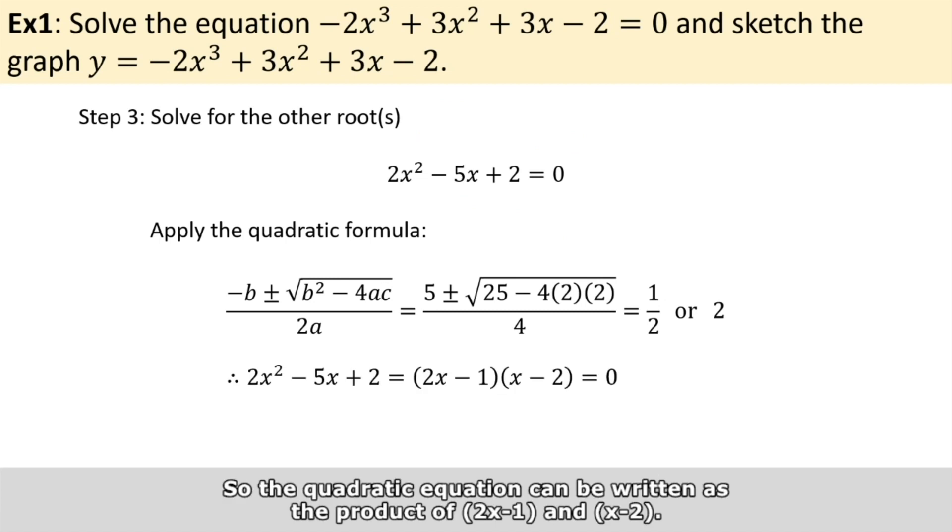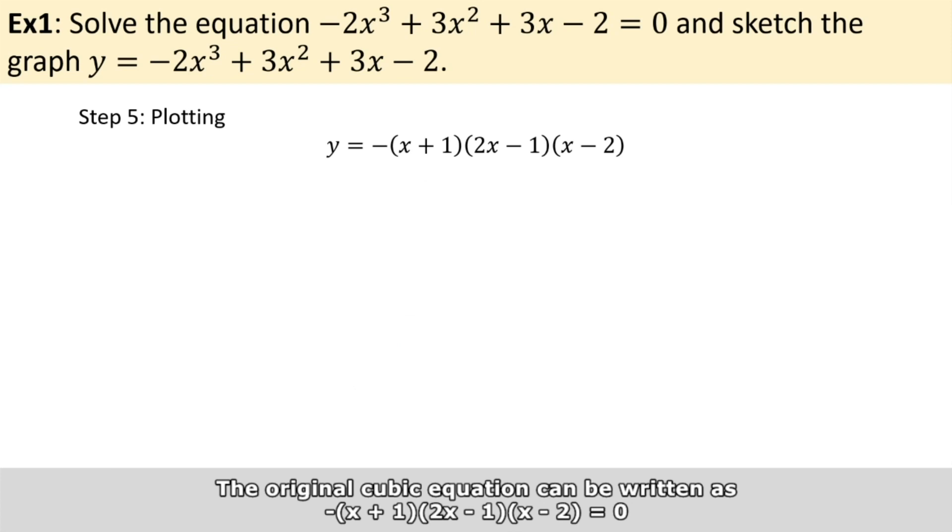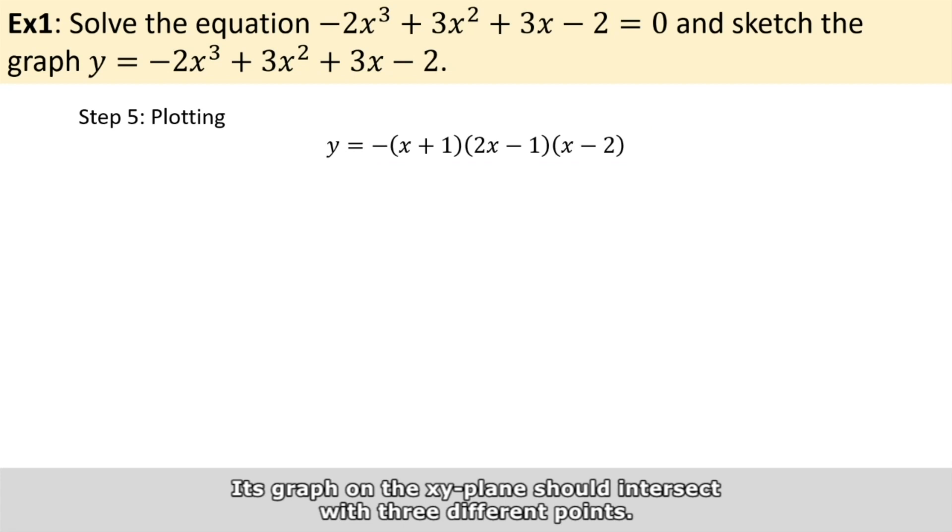So the quadratic equation can be written as the product of 2x minus one and x minus two. Now the original cubic equation can be written as the negative sign times the product of x plus one, 2x minus one, and x minus two. Its graph on the xy plane should intersect at three different points.